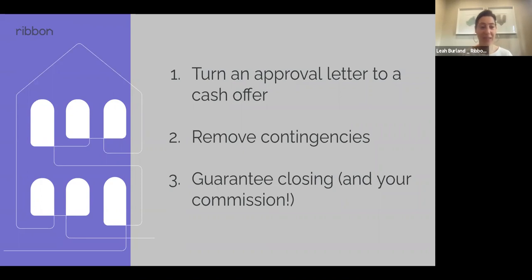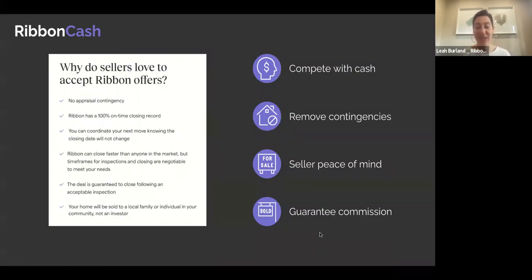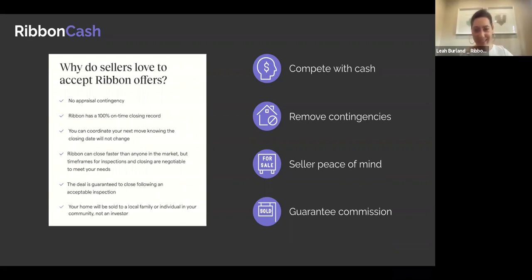In addition to converting to cash and removing contingencies, we're guaranteeing the home will close. The inspection is the only contingency we're not removing — your buyer still has a due diligence period. But after that period, Ribbon is committed to purchasing the home no matter what. The seller accepts the Ribbon offer because it's cash, non-contingent, guaranteed to close on time — avoiding the dreaded domino effect of one closing delaying another.